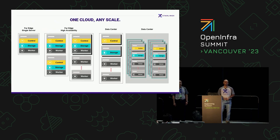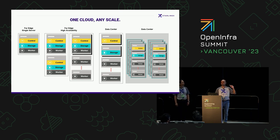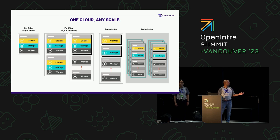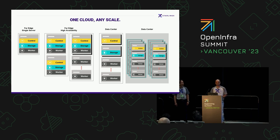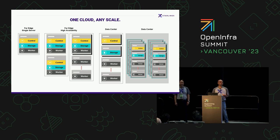The key takeaway is: StarlingX is one cloud, any scale. It is extremely scalable — deployable on as simple as one single bare-metal server, or with high availability, or in a sophisticated distributed environment in a data center or edge cloud. StarlingX already supports a very broad set of verticals and use cases. We encourage everyone to explore and try StarlingX, get engaged in the community discussions, and any feedback, suggestions, or contributions are welcome.